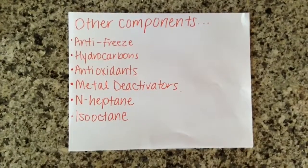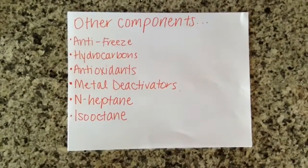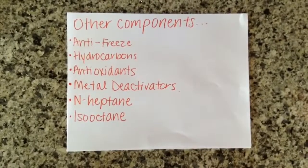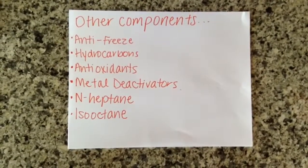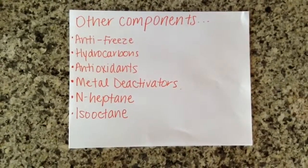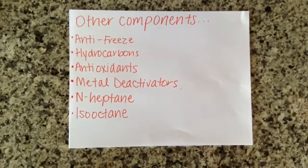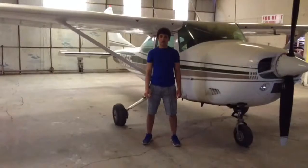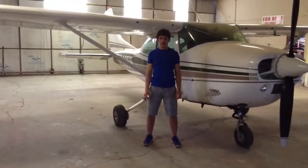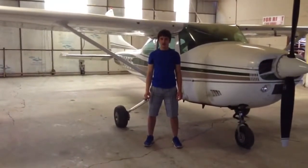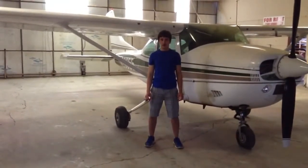Molecular components in jet fuel include antifreeze, hydrocarbons, antioxidants, metal deactivators, and heptane and isooctane. A perfect blend between kerosene and gasoline creates an efficient, clean-burning fuel.